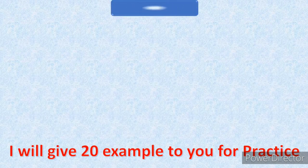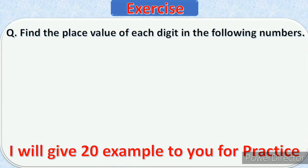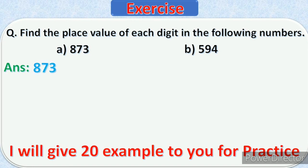Now we will see the exercise. After this exercise, I will give 20 examples for you. Here is our question: find the place value of each digit in the following numbers. We will solve the first example. We will write the number 873 and its place value. We will find the place value of 3.